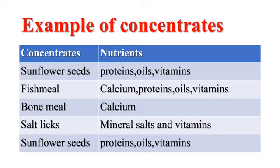Now, examples of concentrates and the nutrients they bring to the body: sunflower seeds contain proteins, vitamins, and oils; salt lick contains vitamins; bone meal is another example of a concentrate that contains calcium; and fish meal contains different nutrients including vitamins, oils, proteins, and calcium. These are very important to animals.